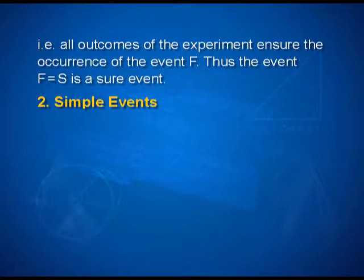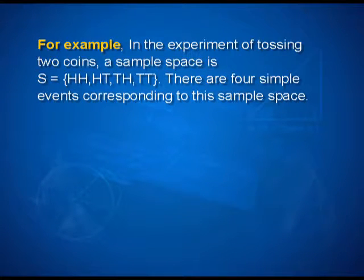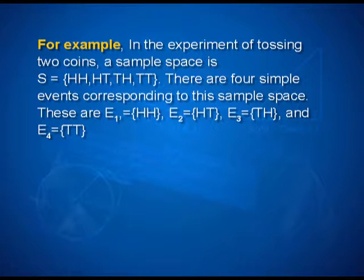Now look at the simple event. If an event E has only one sample point of a sample space, it is called a simple or elementary event. In a sample space containing n distinct elements, there are exactly n simple events. For example, in the experiment of tossing two coins, the sample space is S = {HH, HT, TH, TT}. There are four simple events: E1 = {HH}, E2 = {HT}, E3 = {TH}, and E4 = {TT}.